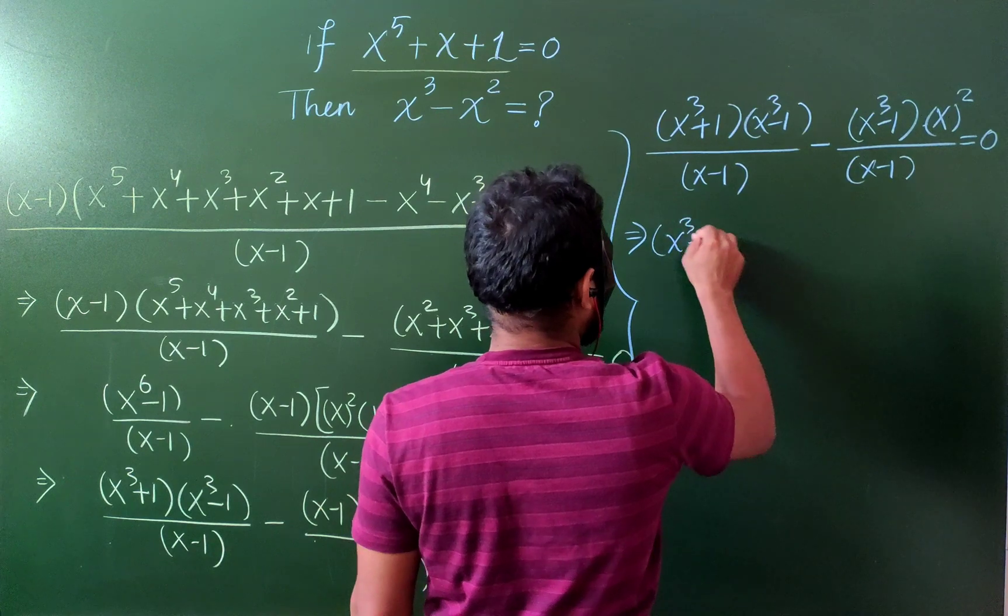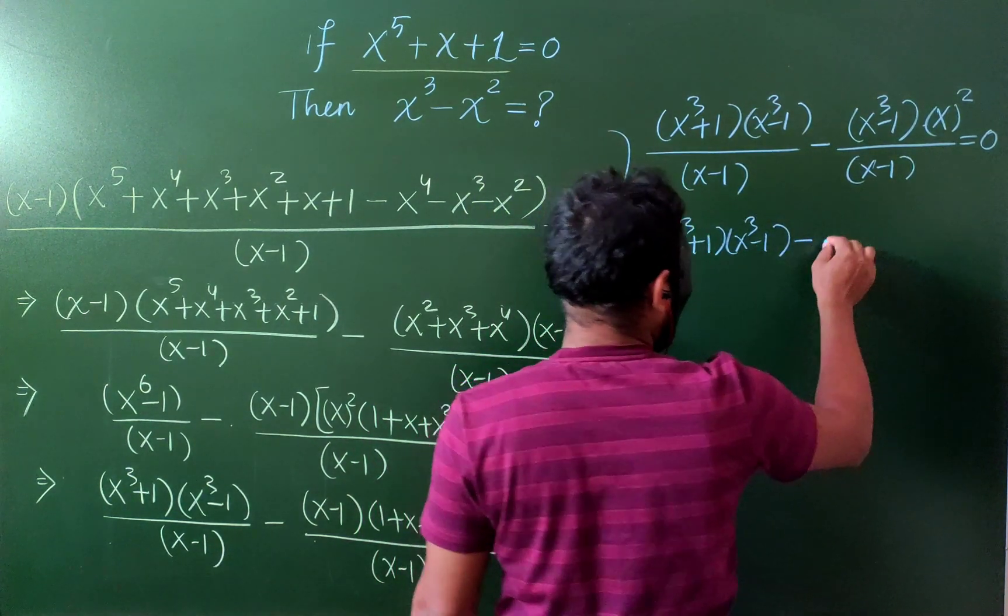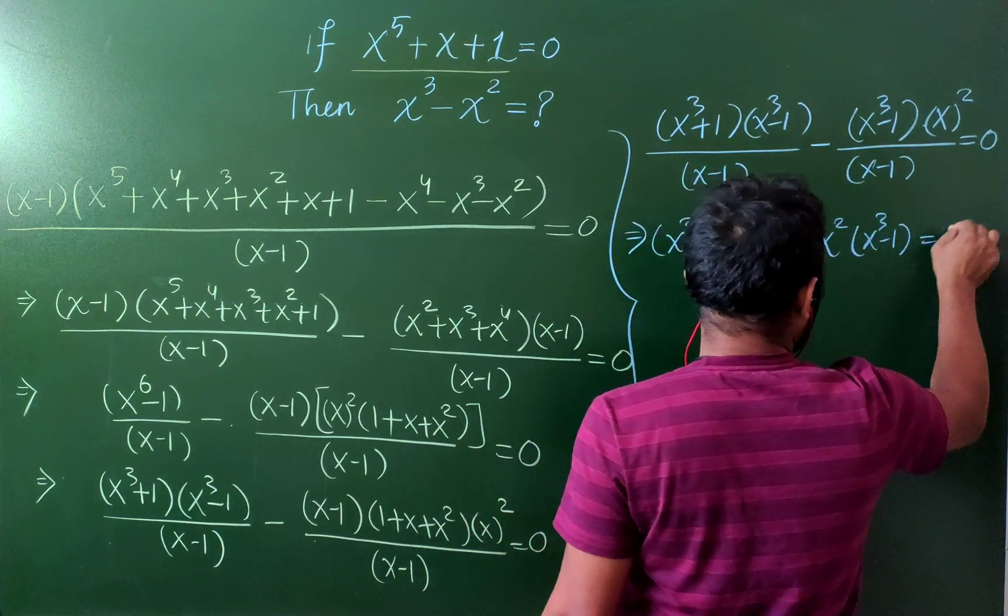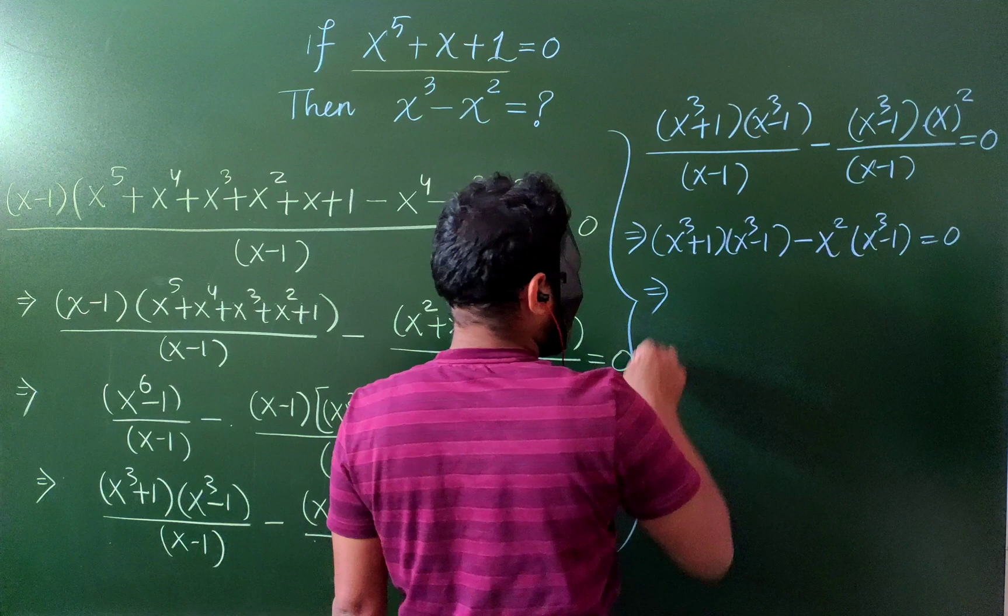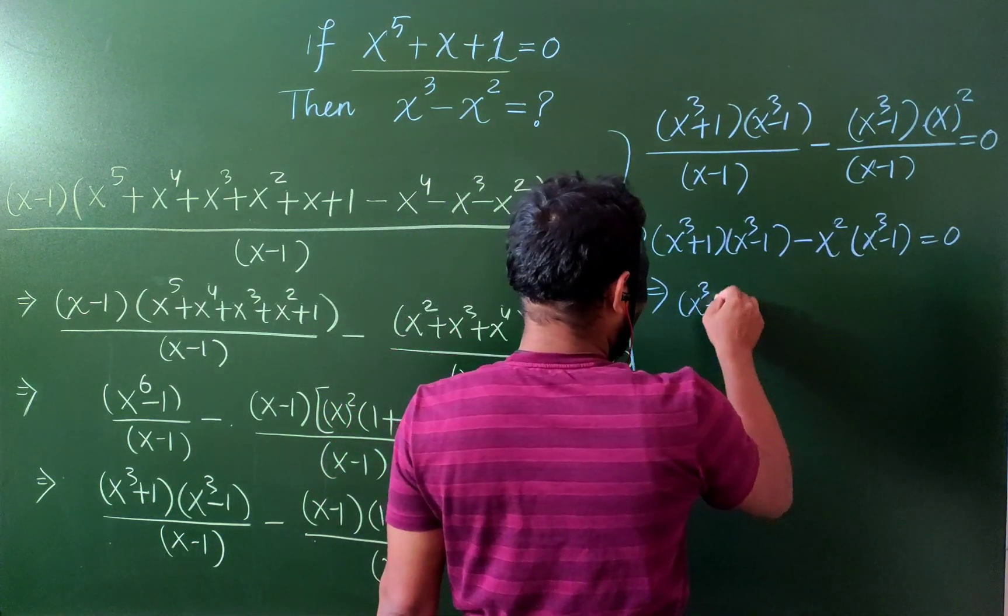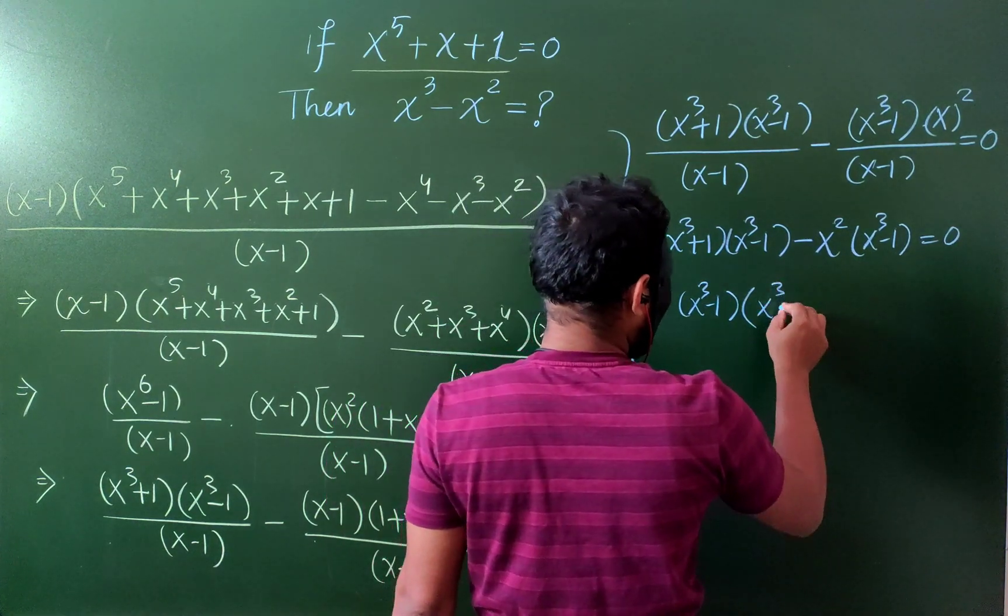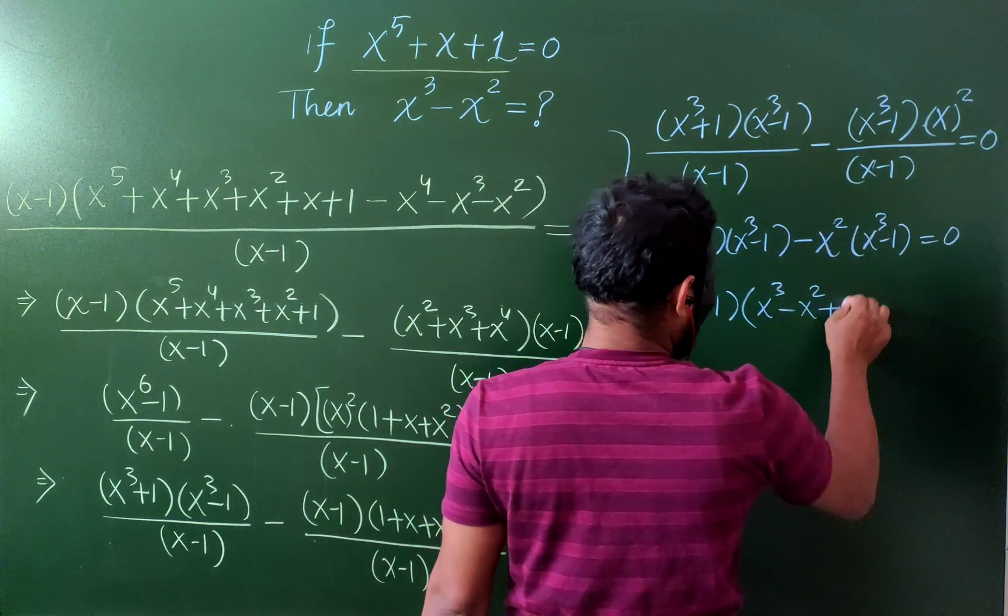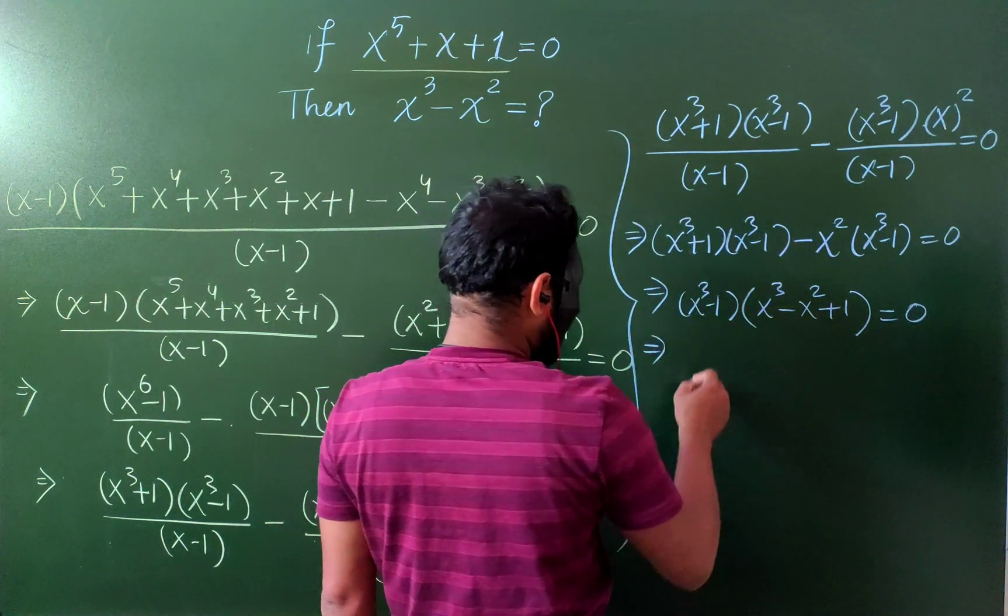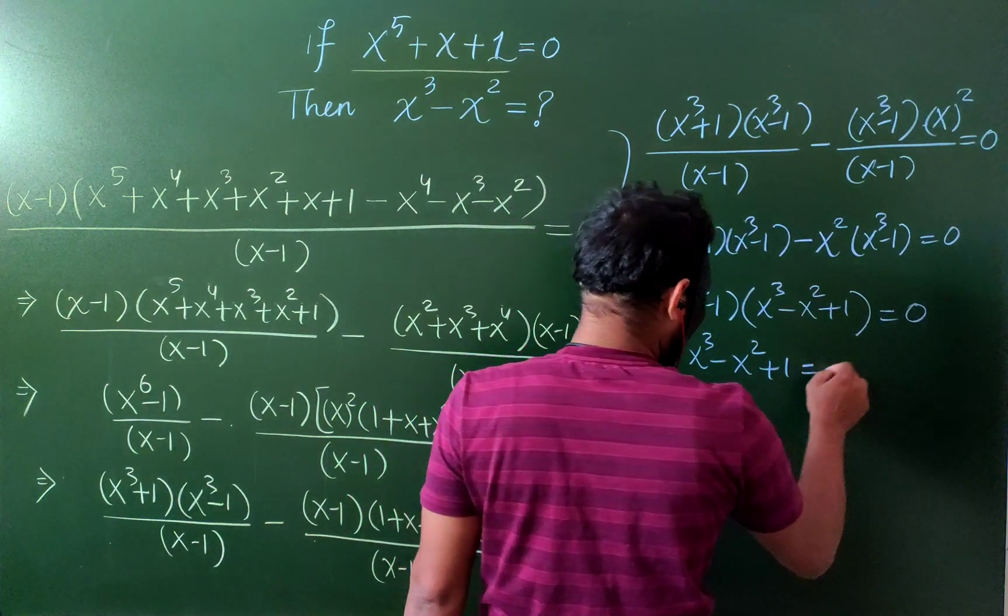Now, let's simplify. x^3 minus x^3 cancels, minus 1, then we have x^3 minus x^2 plus 1 equals zero. This one goes to that side. So, x^3 minus x^2 plus 1 is zero.